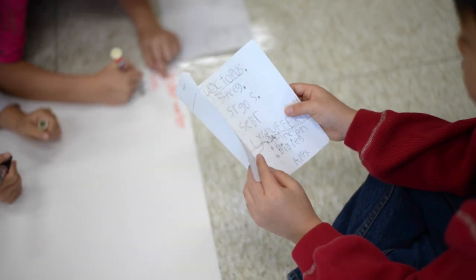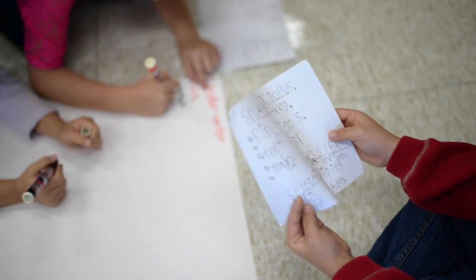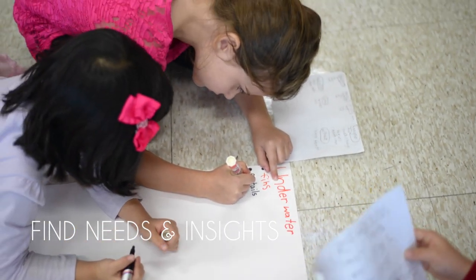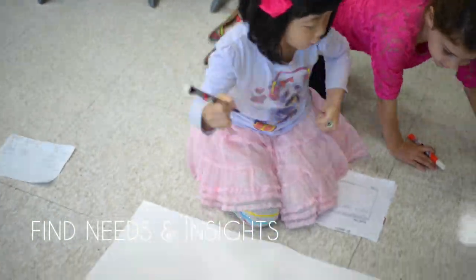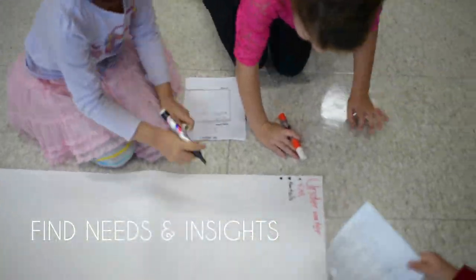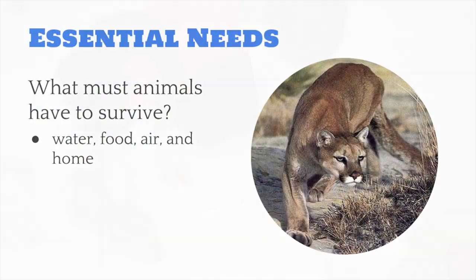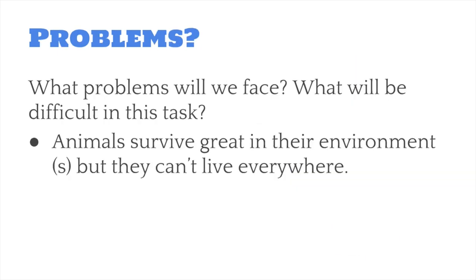In the define stage, the class discussed what were the needs of all animals and tried to find insights that would affect the design of their ultimate animal. They soon figured out that all animals had external parts that serviced them with their essential needs, as well as helped them survive in their unique environments.